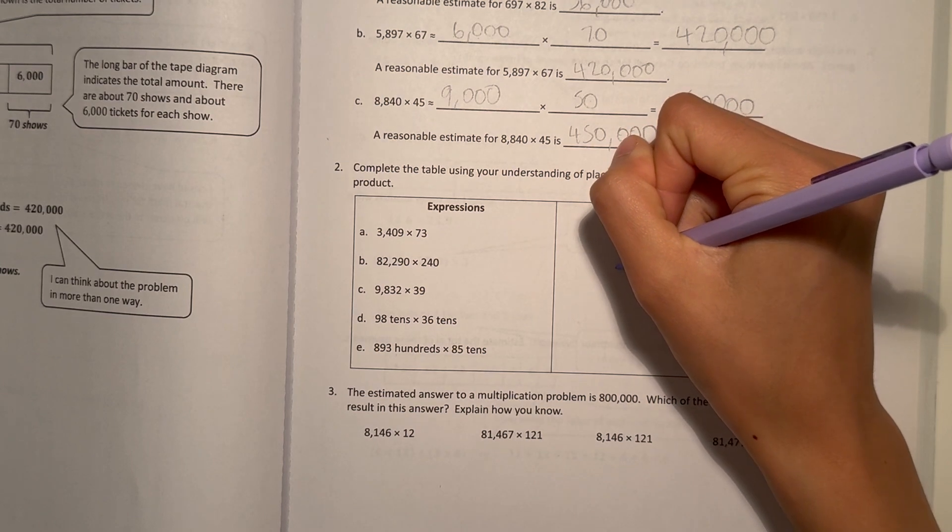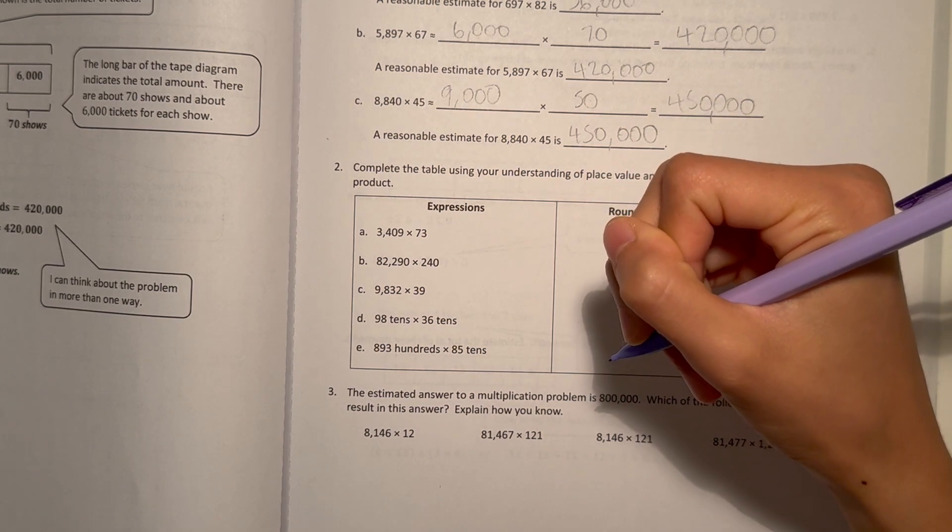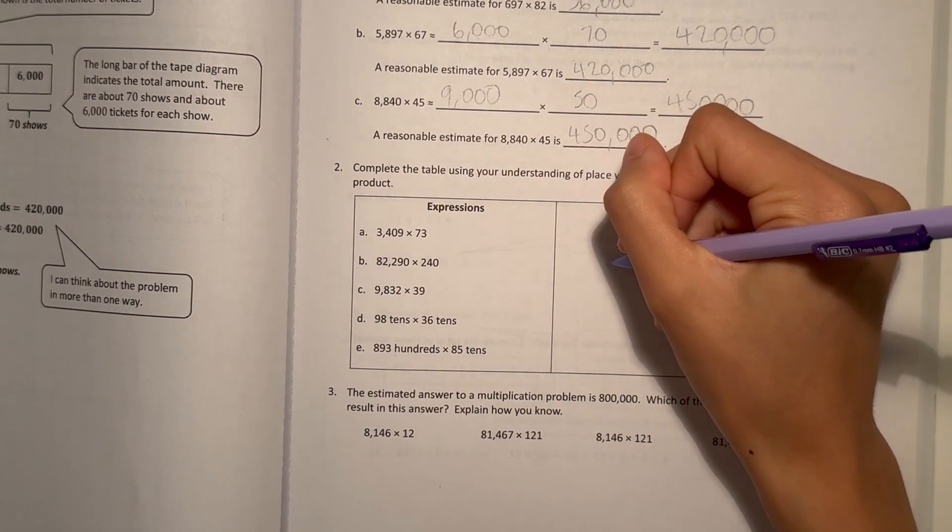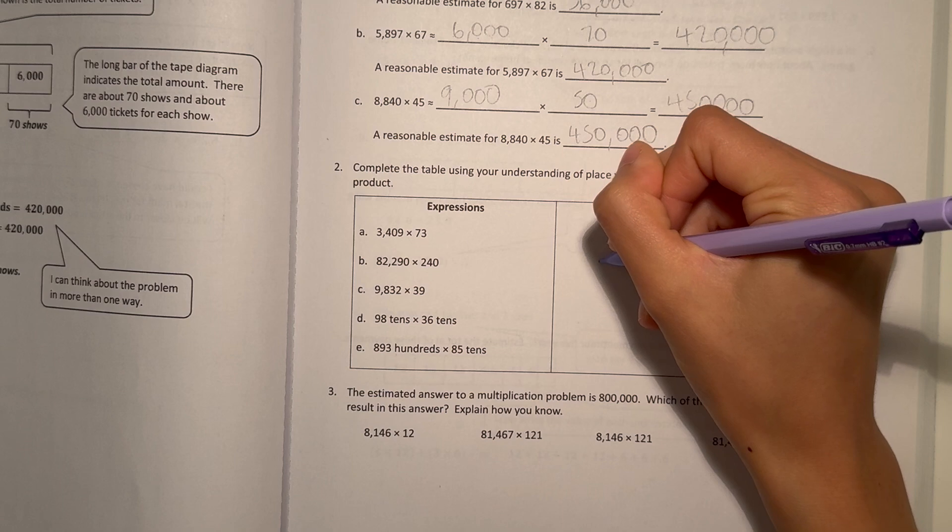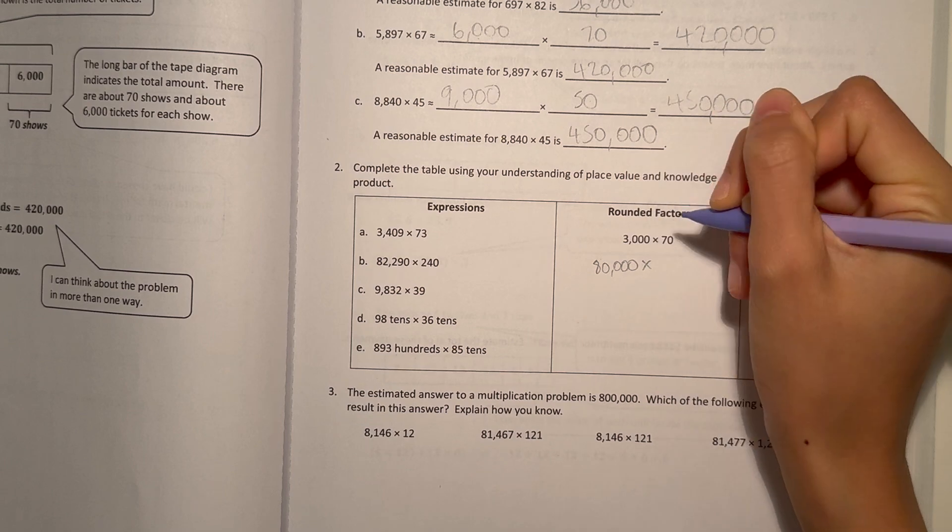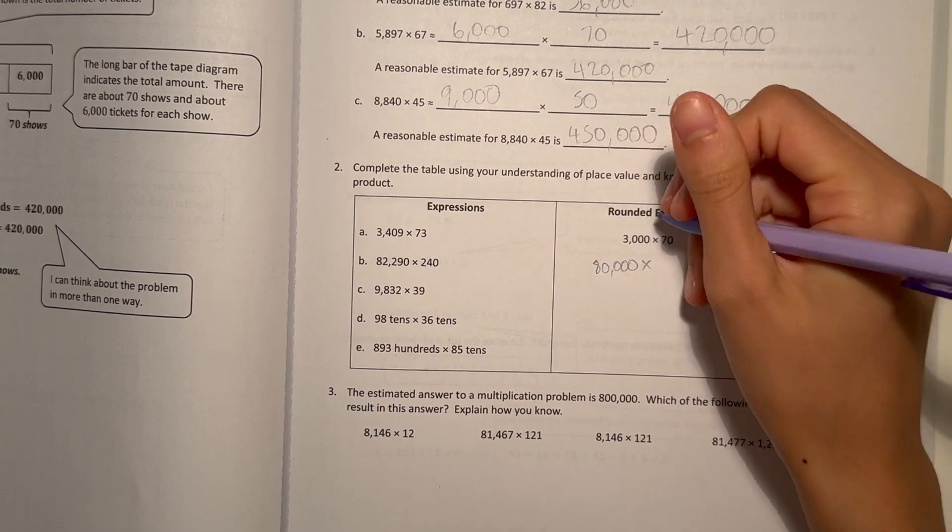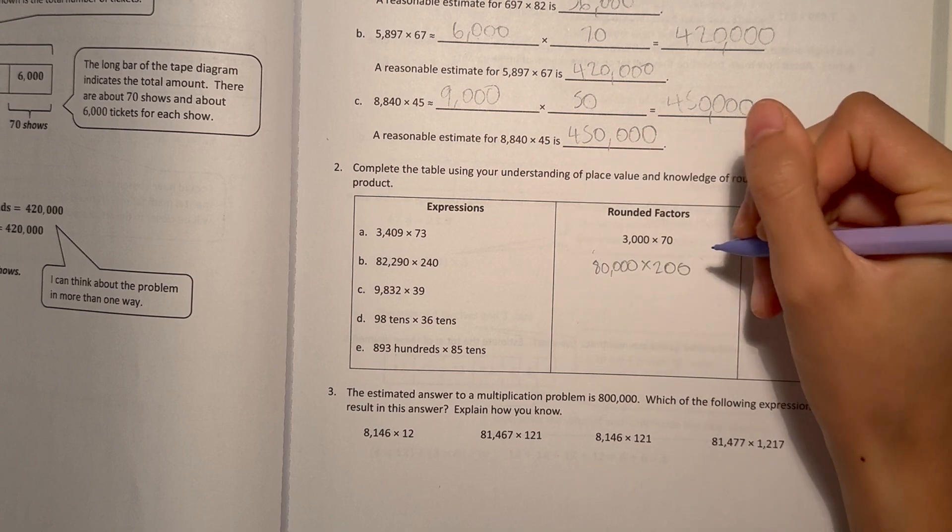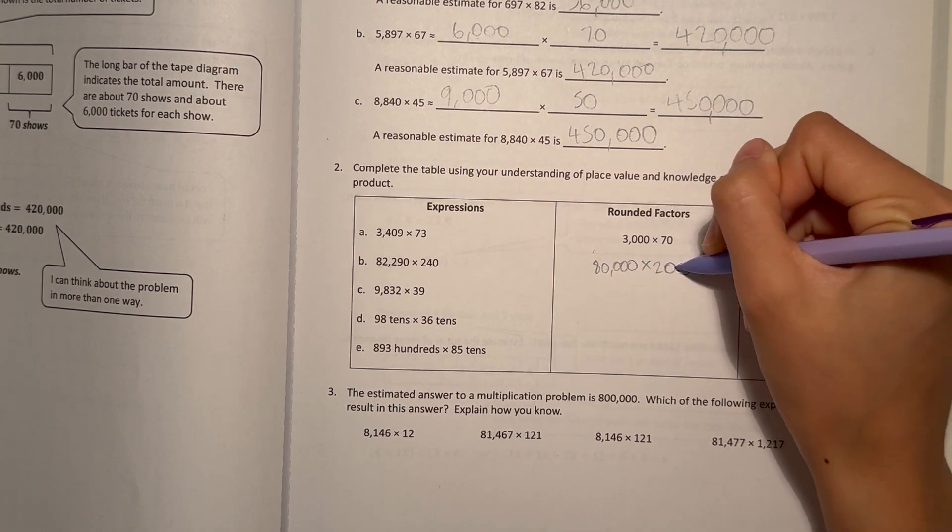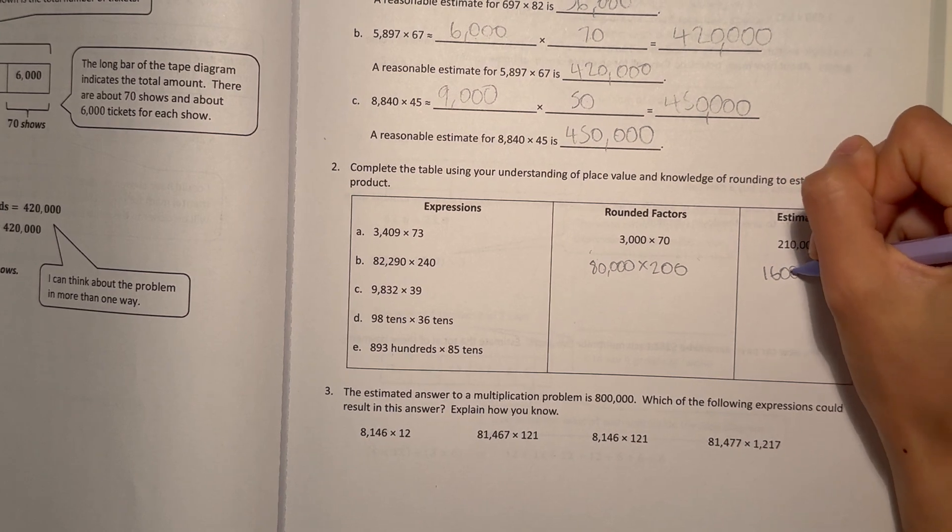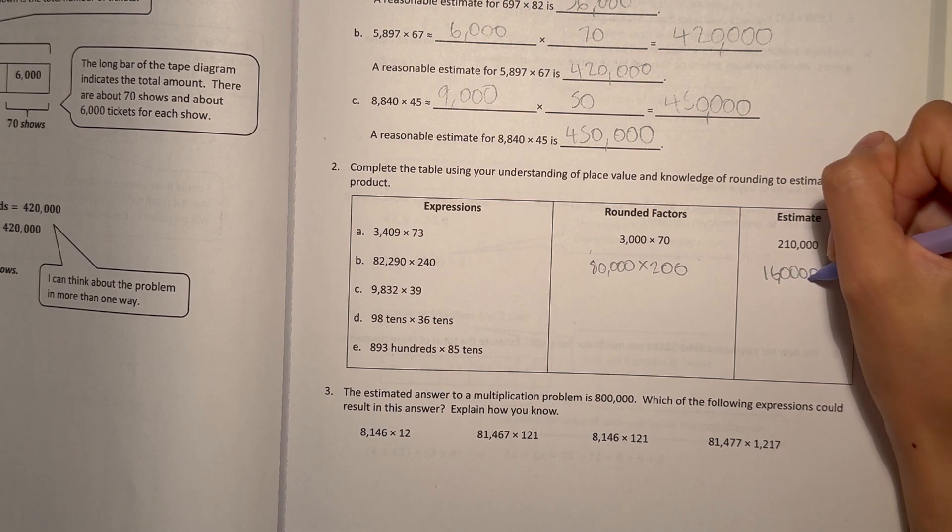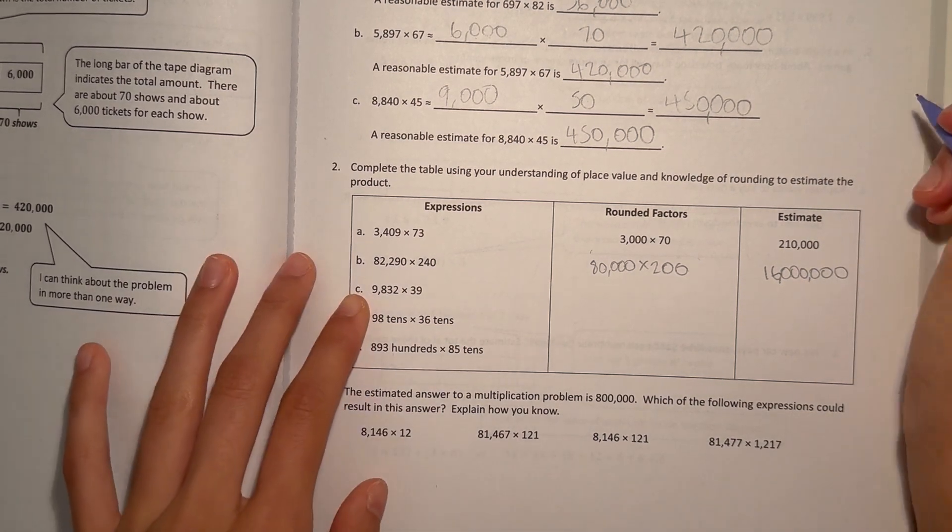B, 82,290 to the nearest 10,000. Because the greatest place value in that number is 10,000, that would be 80,000. Times 240 to the nearest hundreds place would be 200. 8 × 2 is 16, and there's 1, 2, 3, 4, 5, 6 zeros. So that would be 16,000,000.